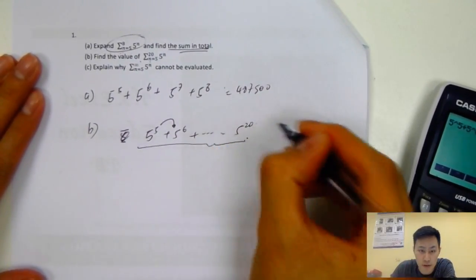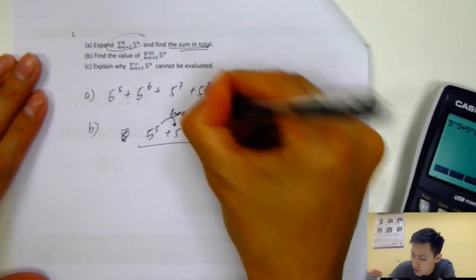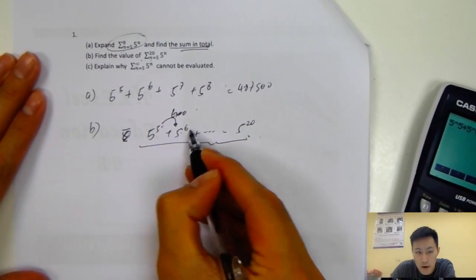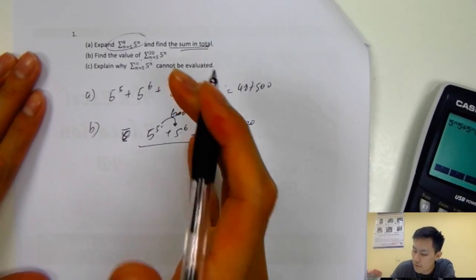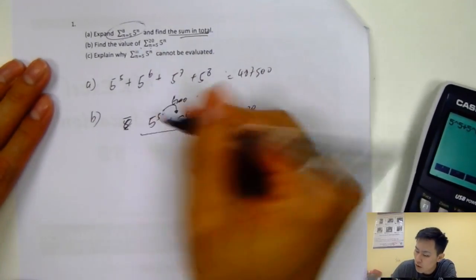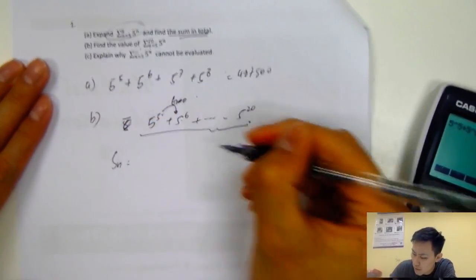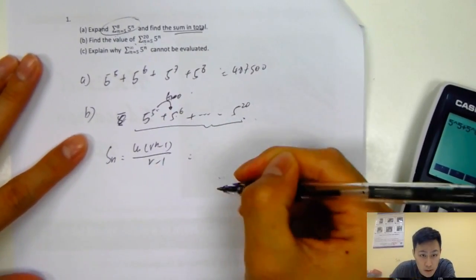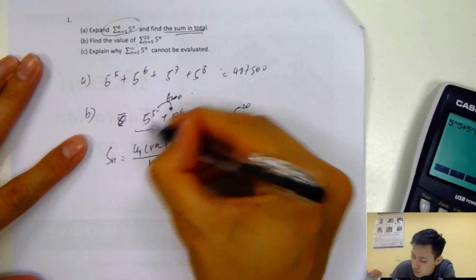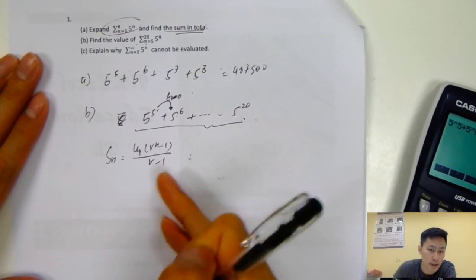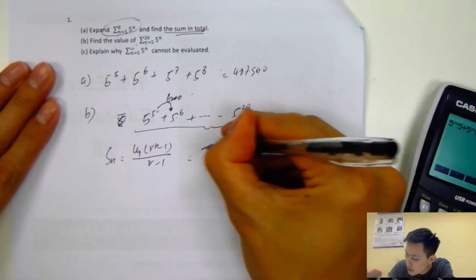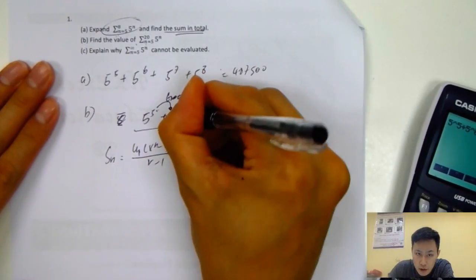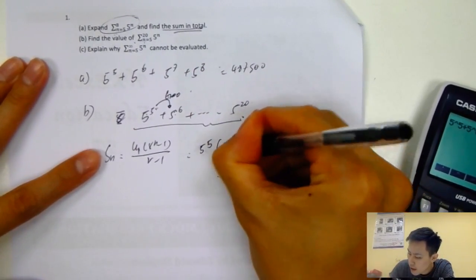This is a geometric sequence because you multiply by 5 each time: 5 power 5, multiply 5 to get 5 power 6, multiply 5 again to get 5 power 7. We know that the sum of a geometric sequence is u₁ times (r to the n minus 1) over (r minus 1). So u₁ is the first term, 5 power 5, and r — the common ratio, second term over first term — is 5.